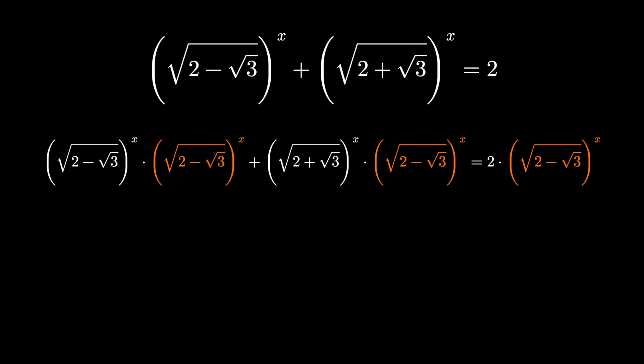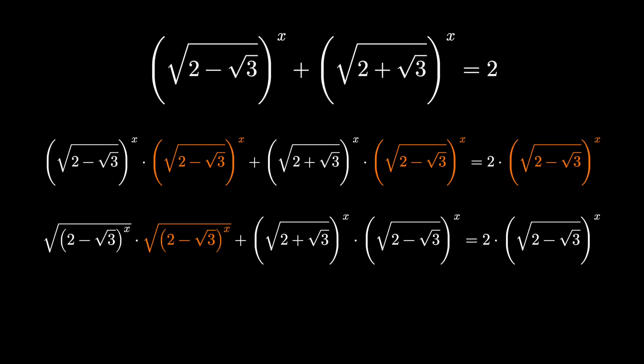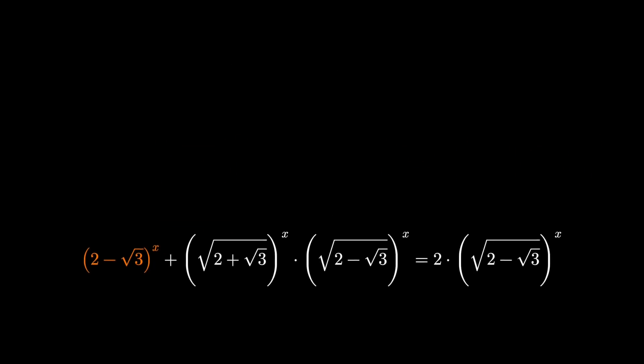We have to multiply every term by this and by playing around with properties of exponents we see this square root times itself, squaring a square root undoes that square root. We also get a nice thing going on with properties of exponents in the second term.